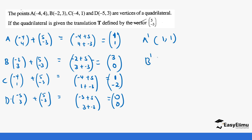For C prime: 4 plus 5 gives 1 — wait, C is (4, 1): negative 4 plus 5 is 1, and 1 plus negative 3 is negative 2. So C prime is (1, negative 2). For D prime: negative 5 plus 5 is 0, and 3 plus negative 3 is 0. So D prime is (0, 0). You can see how we tackled that one by one.